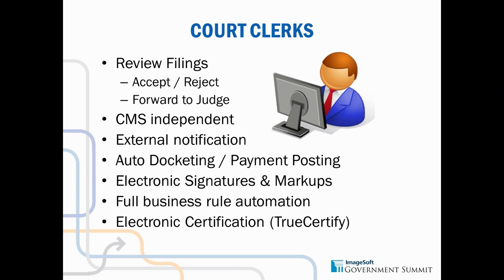The second one is full business rule automation — building those rules. In the paper world, you don't have a standard set of rules established in a workflow process. Having full business rules automation and providing tools to manage those rules allows you to expand and change your processes as needed, but also keep them consistent across the board. The same filing always follows the same process — it automatically gets assigned to the clerk working that case, gets assigned to the judge working that case. Hearings, as they come up, are automatically queued for the judge to see in their calendar.